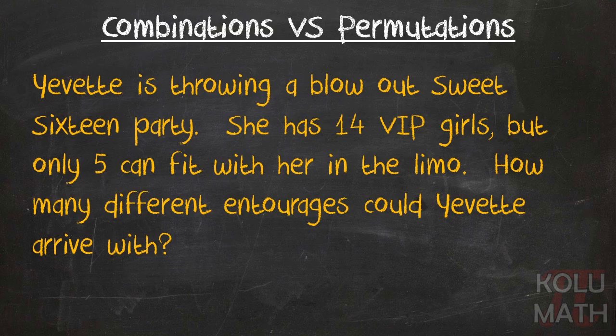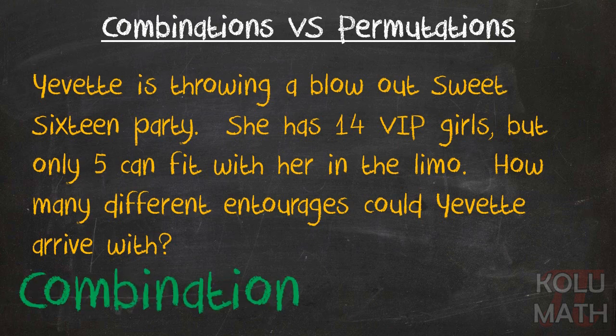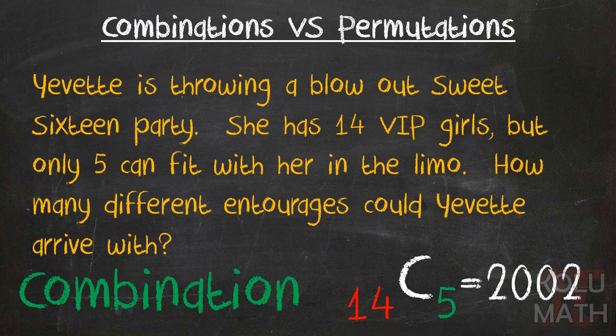All right, so let's take a look at this example and figure out if it's a combination or a permutation. Yvette is throwing a blowout Sweet 16 party. She has 14 VIP girls, but only five can fit with her in the limo. How many different entourages could Yvette arrive with? Does it matter what order they get in the limo? Well, it may seem like it does, but as long as they've got a ride, it really doesn't matter. So that's a combination. And we can go ahead and plug those numbers in. We've got 14 VIPs, we're choosing five. 14C5 is 2002.